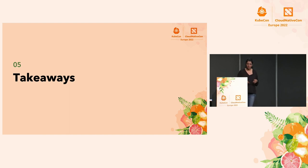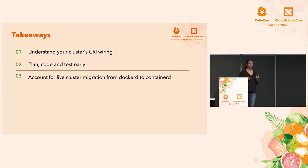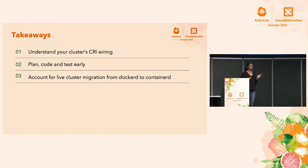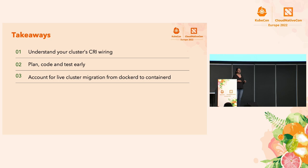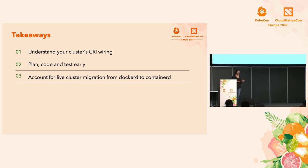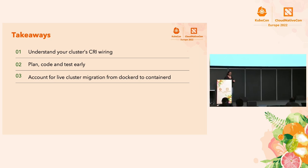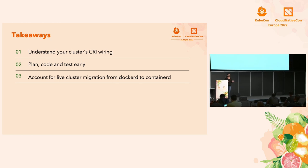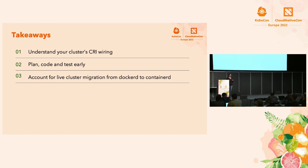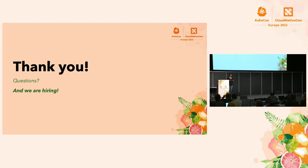To wrap up with some takeaways: understand your cluster CRI wiring. What we thought was a simple migration turned out to be a several-month project. Understand your CRI wiring and plan to test and verify ahead of time, because Kubernetes 1.24 is coming and there will not be Docker Shim anymore. The third big takeaway is you have to account for live cluster migration if you have a large platform. With 220-plus clusters and zero downtime, we had to make sure all live migration use cases were handled. Thank you very much — we are hiring at Intuit, so please come and talk to me, and I can take some questions now.